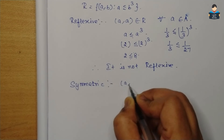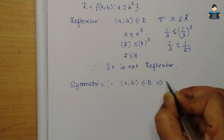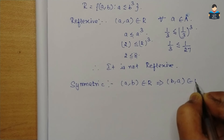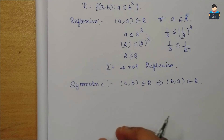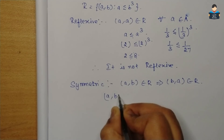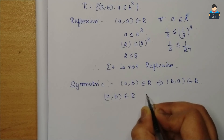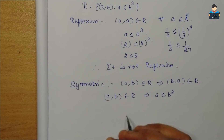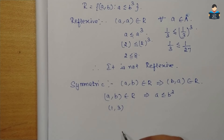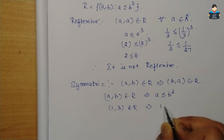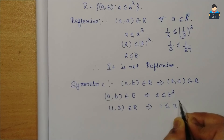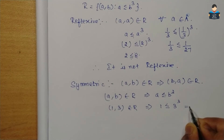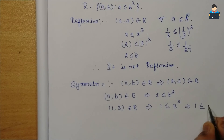Symmetric condition: (a,b) belongs to R implies (b,a) belongs to R. Here, (a,b) belongs to R means a ≤ b³. Take value (1,3) belongs to R: 1 is less than or equal to 3³, that is 1 ≤ 27 — condition satisfied, true.